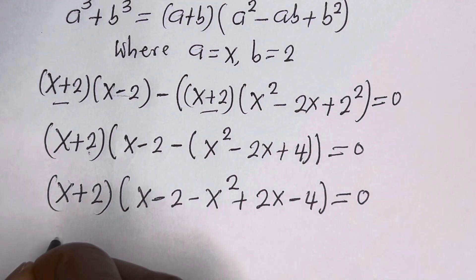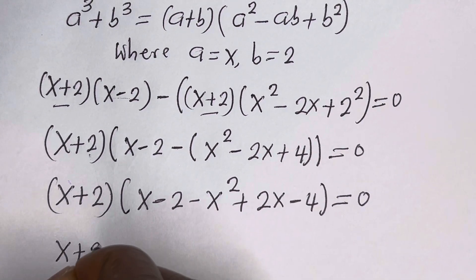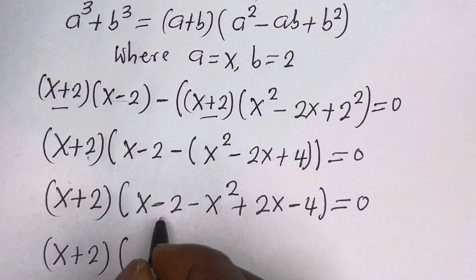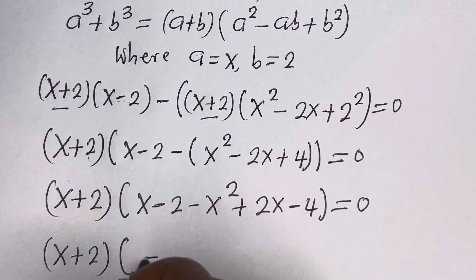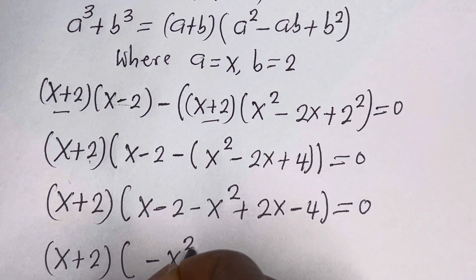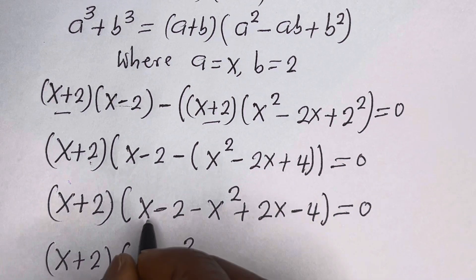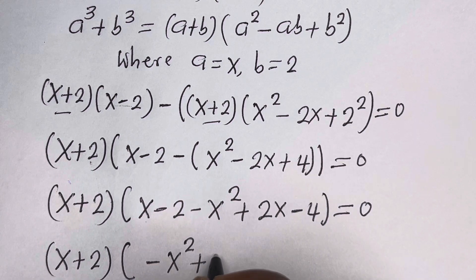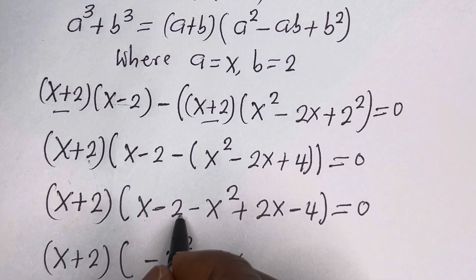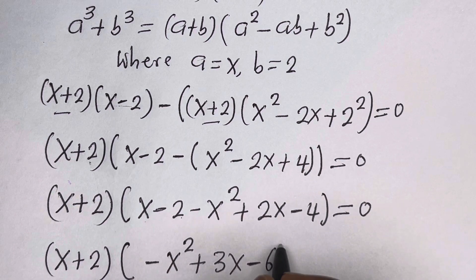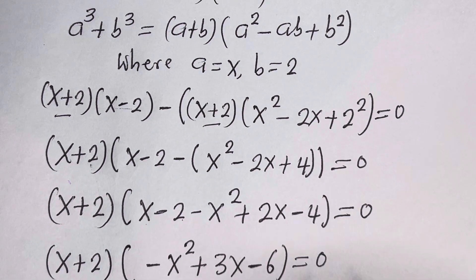This becomes s plus 2 bracket minus s squared plus s plus 2s, that is 3s, minus 2 minus 4, that is minus 6, is equal to 0.